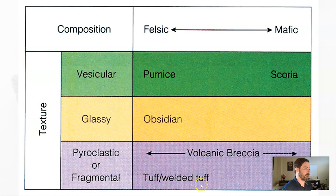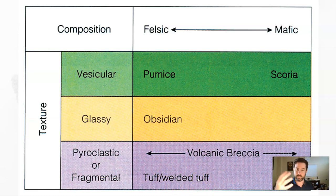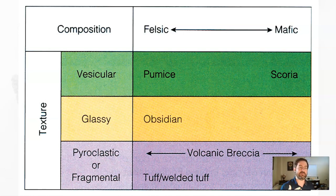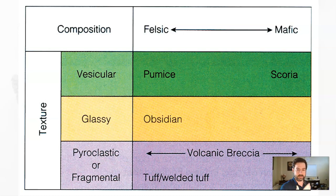Tuff and welded tuff tends to be lighter in color and felsic. That's because volcanoes that explode violently tend to be fed by medium to high silica-based magma chambers, so that material tends to be felsic as well.